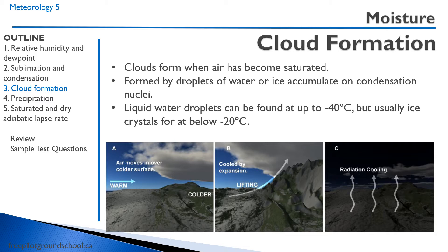Secondly, in panel B, air can be cooled by expansion. If we force air up the side of a mountain, as the air goes up it will expand. As it expands, it will cool, and as it cools, it eventually becomes saturated and the water vapor becomes water droplets.